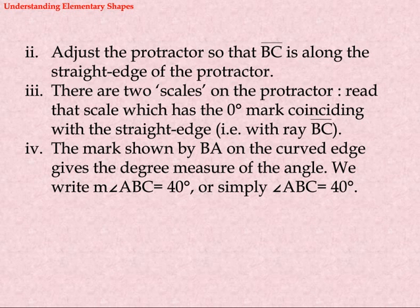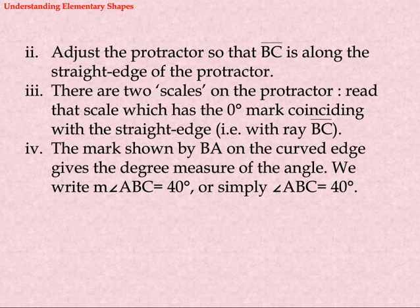Step 2: Adjust the protractor so that BC is along the straight edge of the protractor. Step 3: There are two scales on the protractor. Read that scale which has the zero angle mark coinciding with the straight edge, i.e., with ray BC. Step 4: The mark shown by BA on the curved edge gives the degree measure of the angle. We write angle ABC equals 40 degrees.